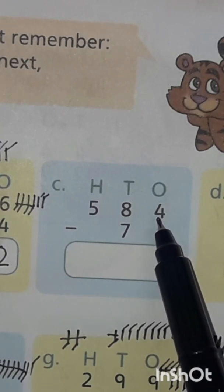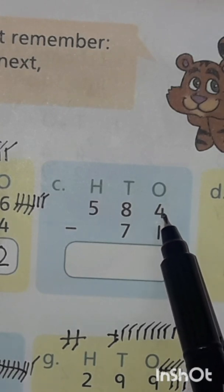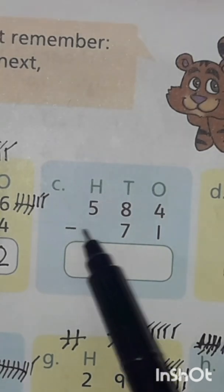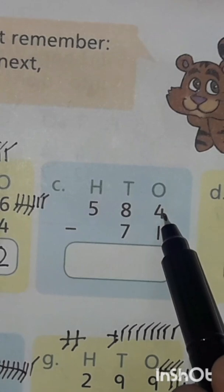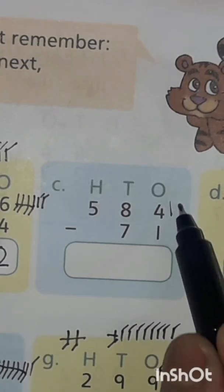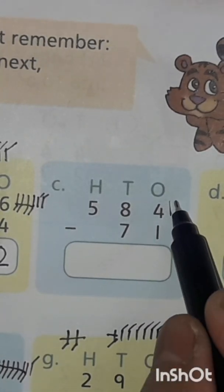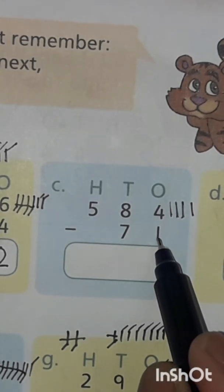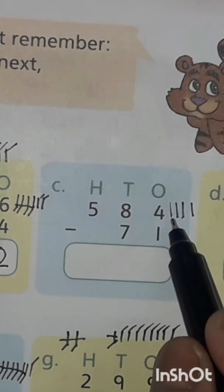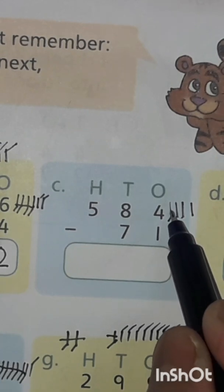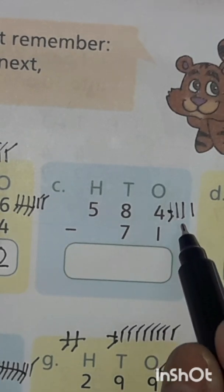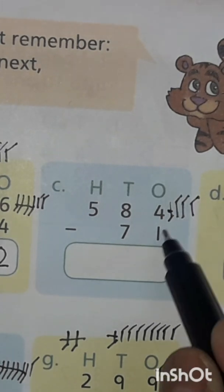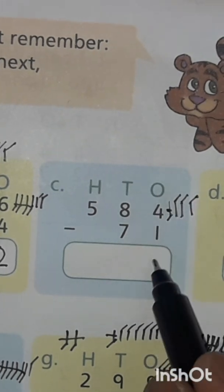What is the first step? The first step is: see the sign. Minus is here, so cut the lines. Make 4 lines: 1, 2, 3, 4. The next number is 1. Cut the one line. 3 lines are left: 1, 2, 3. Write 3 under 1s.